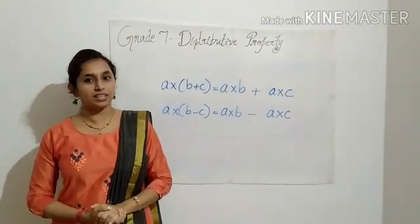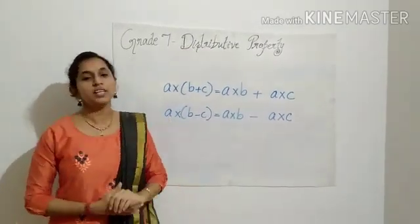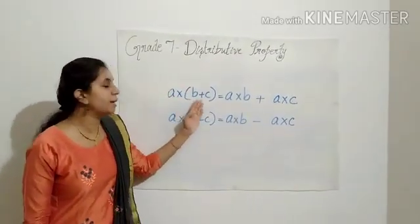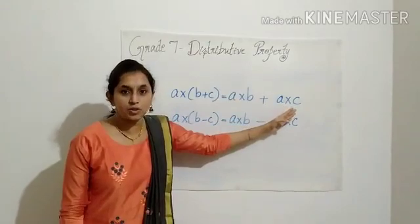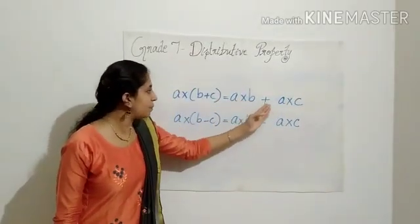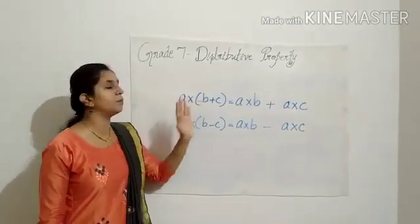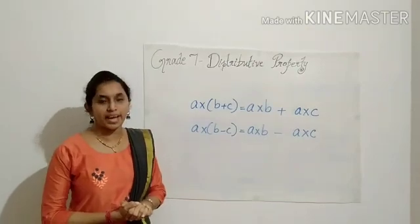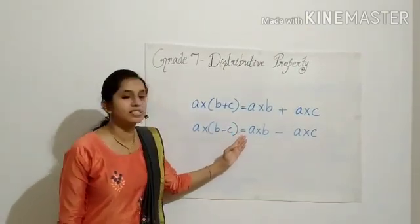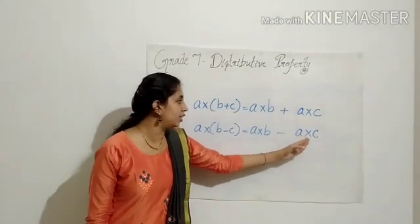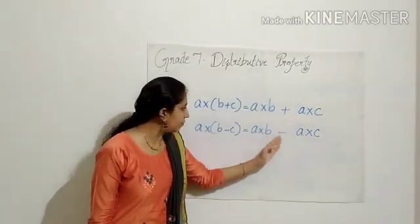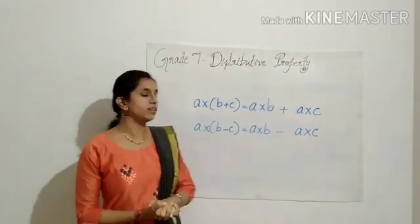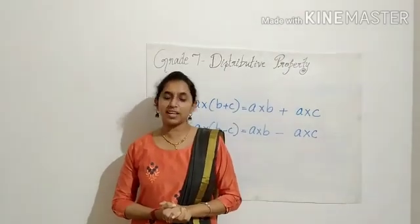Let us recap what we have studied in this video. First, distribution of multiplication over addition: A into B plus C equals A into B plus A into C, and vice versa. Also, distribution of multiplication over subtraction: A into B minus C equals A into B minus A into C, and vice versa. That is the distributive property. That's all for today. Thank you, children.